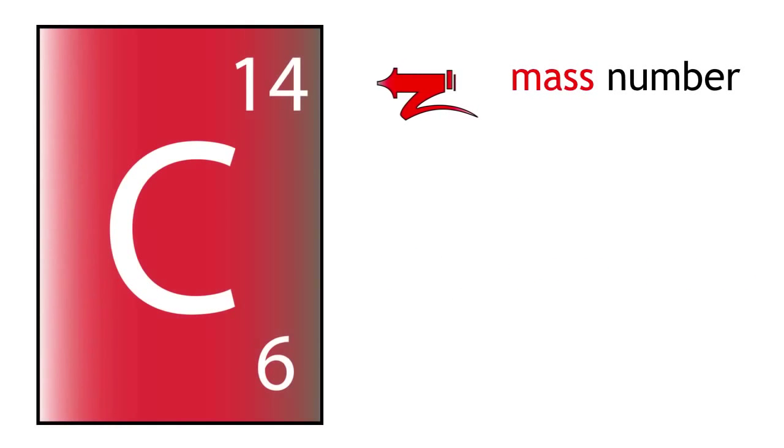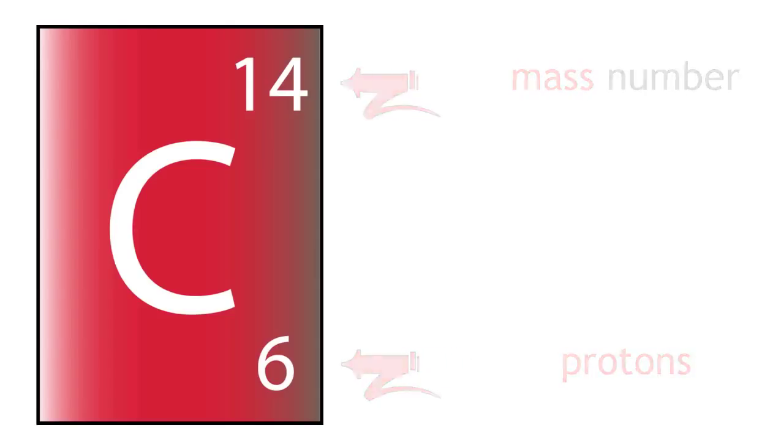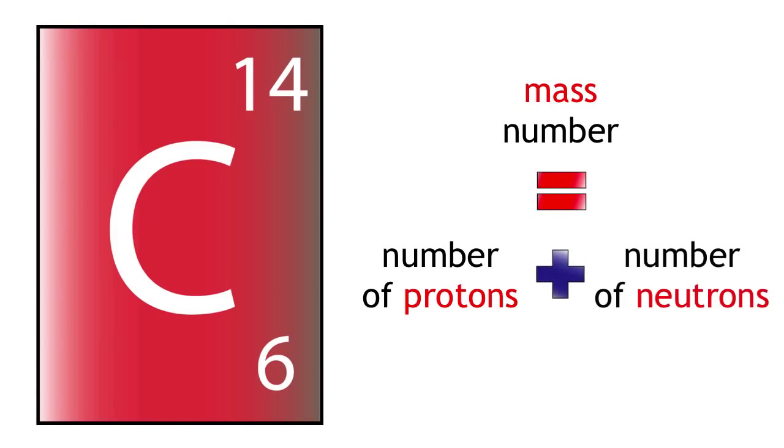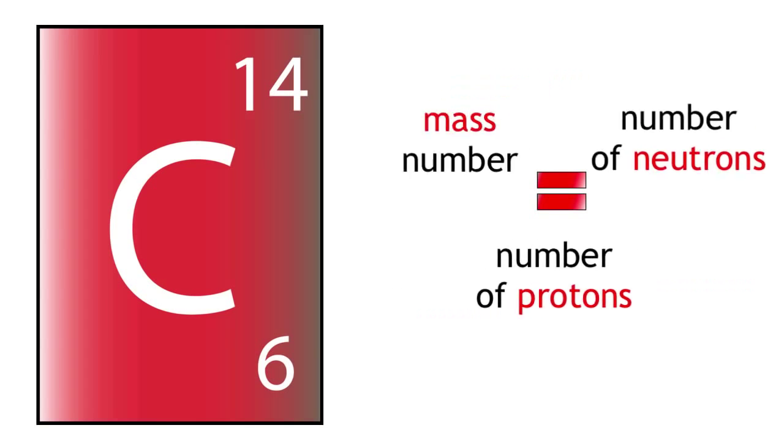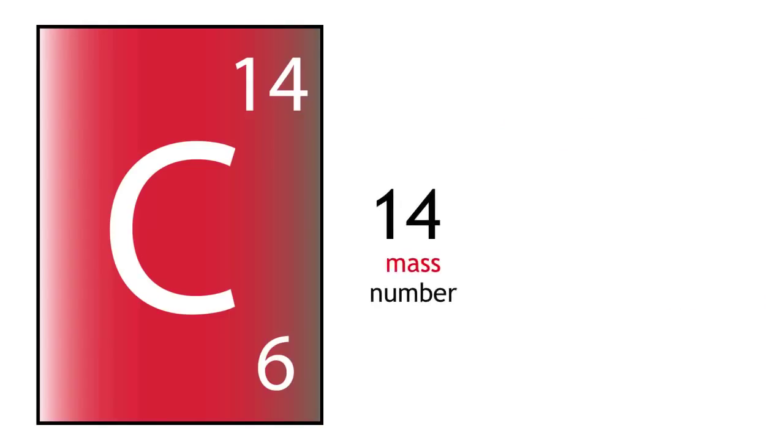Carbon-14 has a mass of 14 but it still only has 6 protons. Mass number equals protons plus neutrons. Rearrange, neutrons equals mass number minus protons. 14 minus 6 equals 8. Therefore, carbon-14 has 8 neutrons.